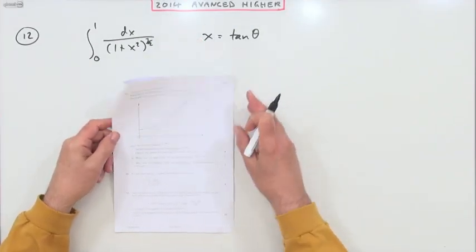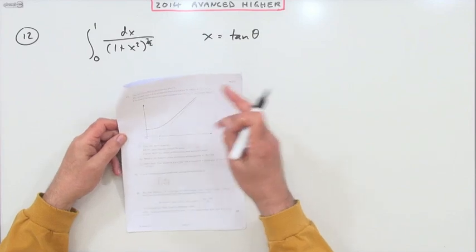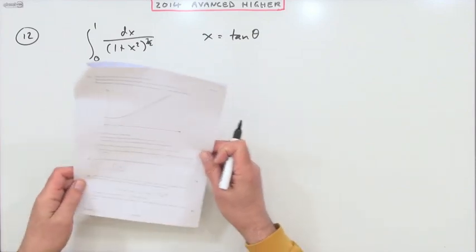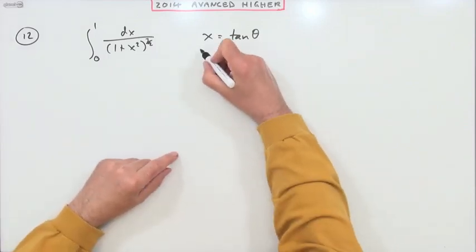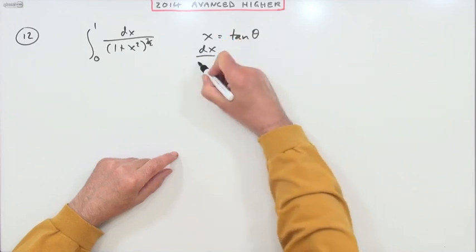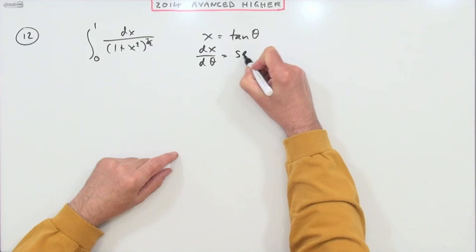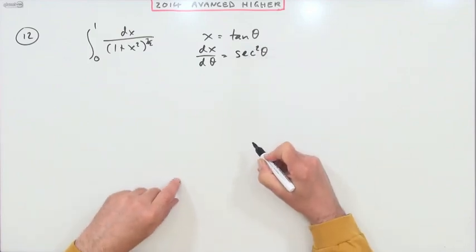Number 12 from the 2014 Advanced Higher, a little integration by substitution. Find the exact value of this using this substitution. Let's change that differential first of all. dx by dθ would be sec squared θ.